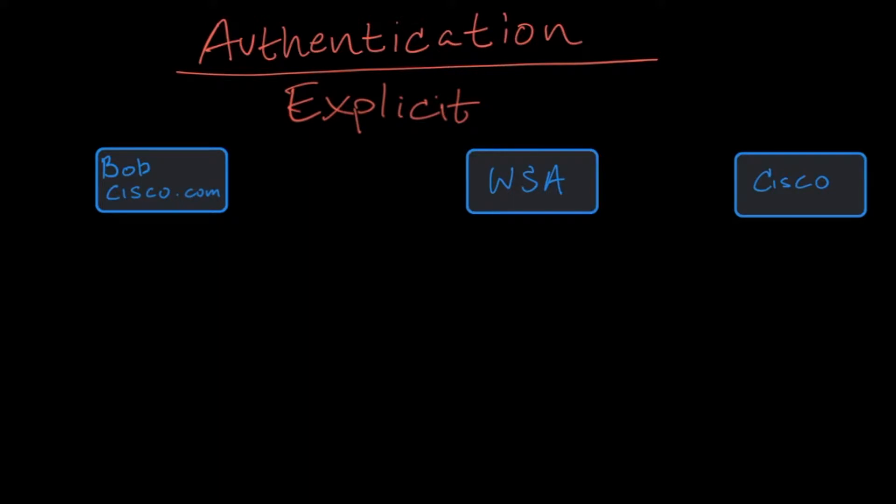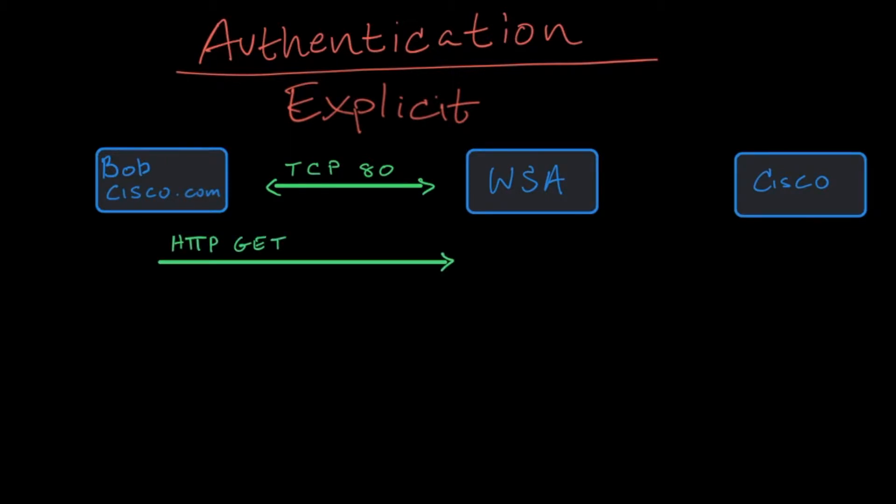A TCP socket is created on port 80 between the workstation and the web security appliance. Once the TCP handshake is completed, Bob's computer sends an HTTP GET request to the proxy. While the destination IP address of the GET request is that of the web security appliance, the requested resource will show the full URL of HTTP Cisco.com and the host header will also show Cisco.com.